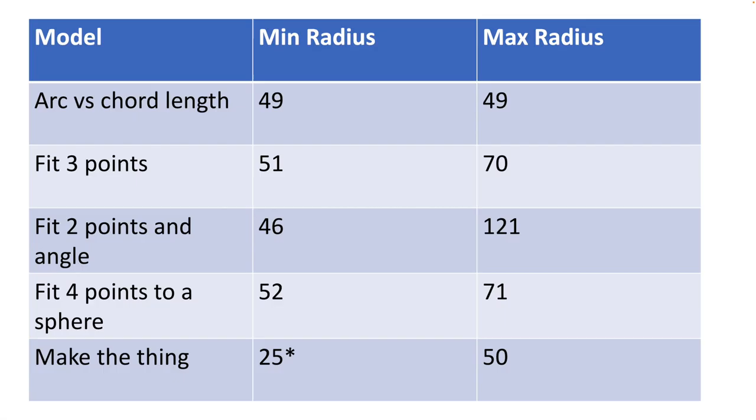So here are all of the results of the models collated into one nice table. The smallest measurement we had was 25 millimeters, but this is an outlier. Only the model where we actually constructed the shape in real life was the one that took into account its radius in the short direction. All of the other models took into account its width in the long direction. If we look at just the radiuses measured of the circles in the long direction, the smallest radius that we measured was 46 millimeters and the largest radius measured was 121 millimeters. It's a little funny that these both came from the same model where we fit two points and an angle to a circle. And the reason why this one has such extremes is that this 46 millimeters is very indicative of the radius of the hair clip at the base of it, and this 121 is indicative of the radius at the tip of it.